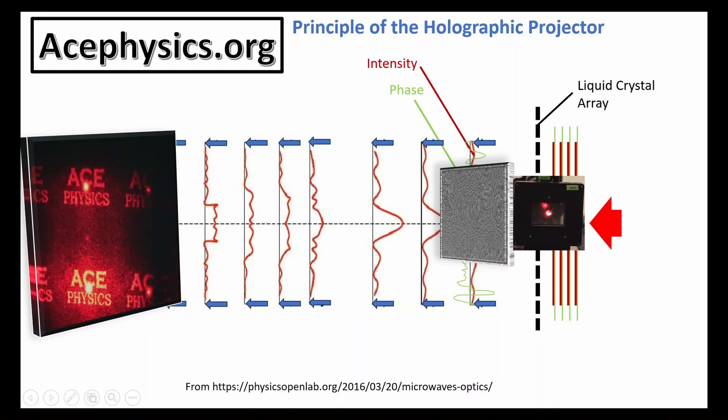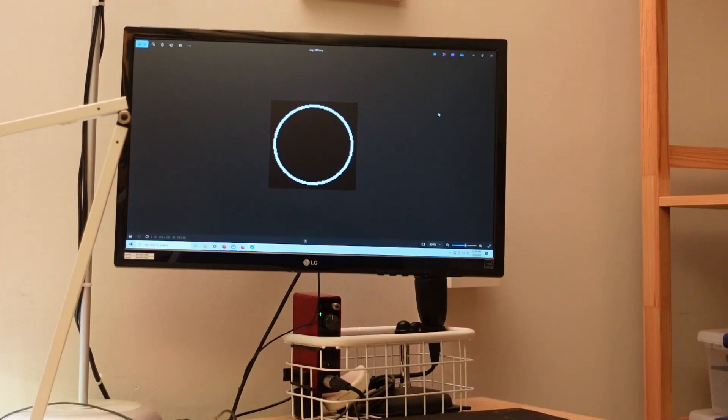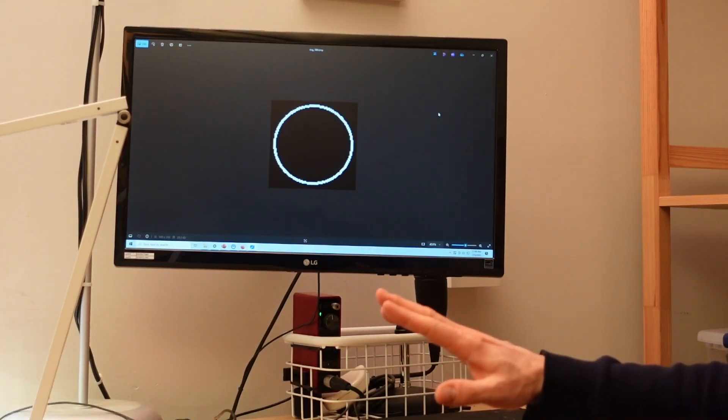As light propagates forward, the image gradually takes shape, becoming clearer through diffraction and interference. In the far field where the wave fronts fully reconstruct the image, what was once an encoded phase pattern emerges as a visible image.